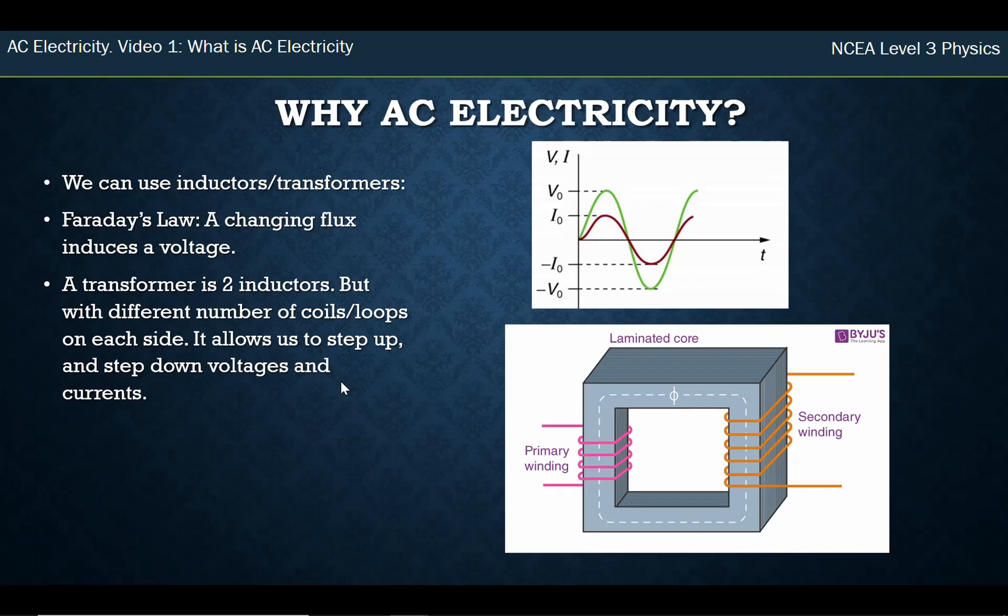Now, a lot of our components and parts of our houses want DC. So the computer I'm recording this on, for example, wants its electricity to be in DC. So we've got to convert it back. But in terms of generating electricity and also using these things with transformers to transmit our electricity, AC electricity at the moment is far more useful.